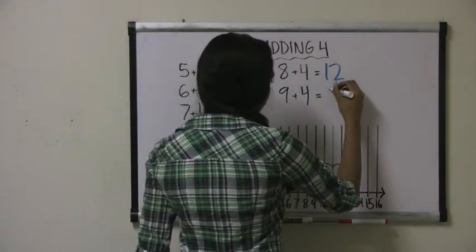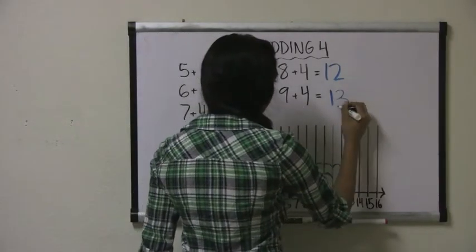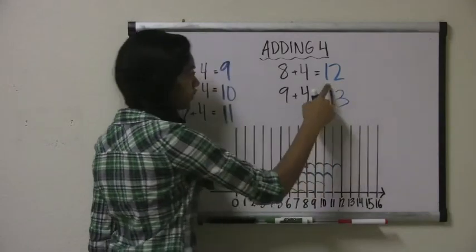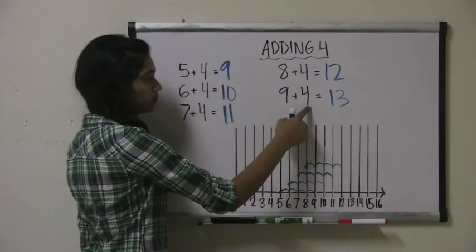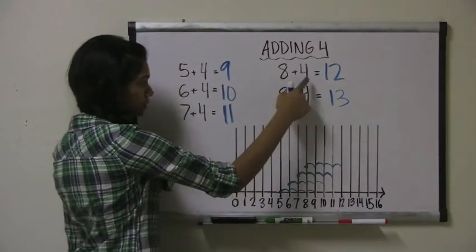It equals 13, because 13 is 1 more than 12, and 9 plus 4 comes after 8 plus 4.